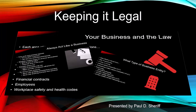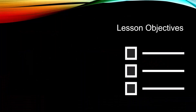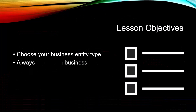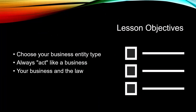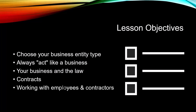This lesson is called Keeping It Legal. The objectives for this lesson are: choosing your business entity type, how you should always act like a business, your business and the law, contracts, and working with employees and contractors.